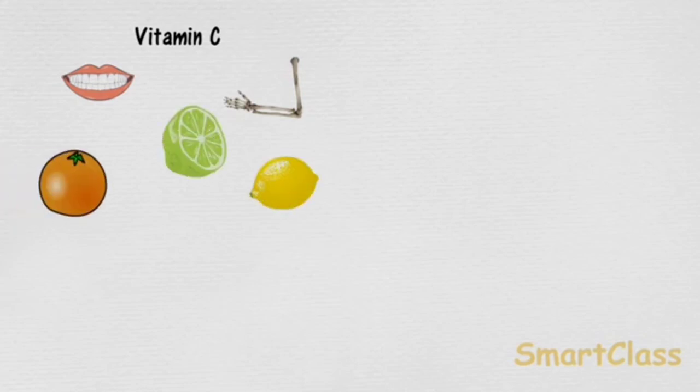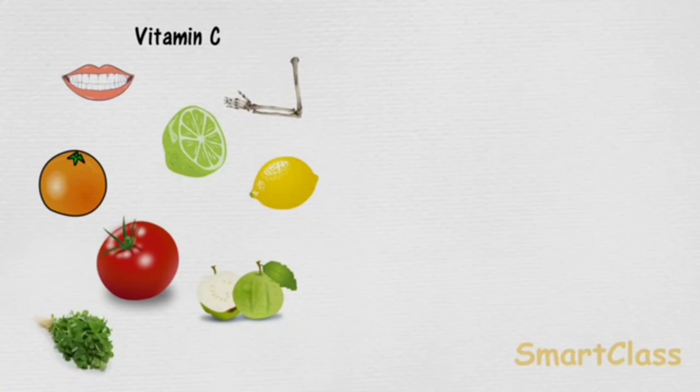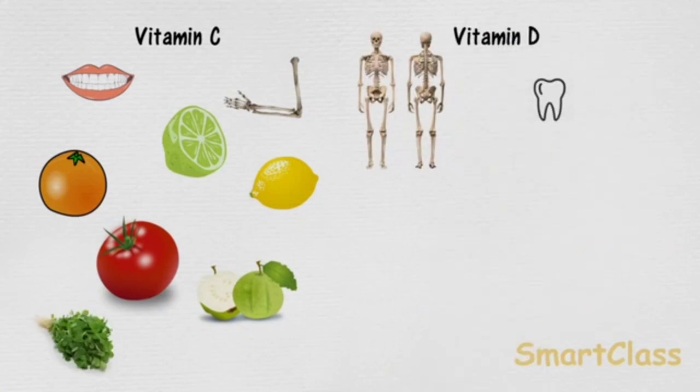Vitamin C helps the body to fight against many diseases. Citrus fruits and vegetables are examples of foods rich in vitamin C. Vitamin D helps our body to use calcium for bones and teeth. Milk and fish are rich in vitamin D.